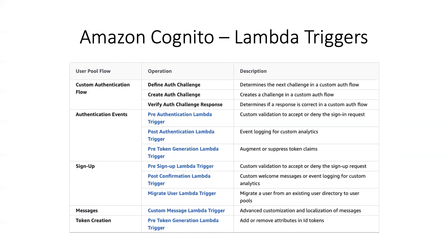For sign-up related features, you can have a pre-sign-up Lambda trigger for custom validation to accept or deny a sign-up request. You can have a post-confirmation Lambda trigger to send a welcome email. You can have a migrate-user Lambda trigger to migrate users from an existing user directory to Cognito's user pool. You can also have a custom message Lambda trigger and a pre-token generation Lambda trigger. This never pops up in the exam, but just know that it's possible.